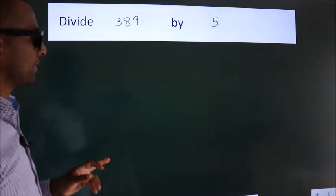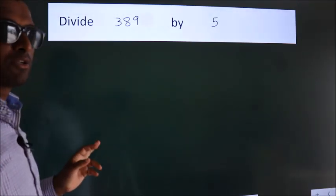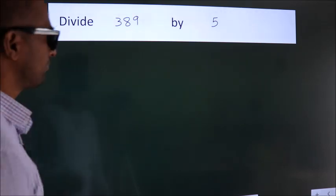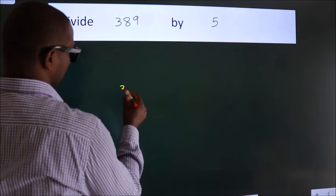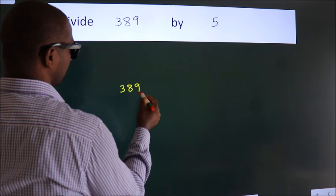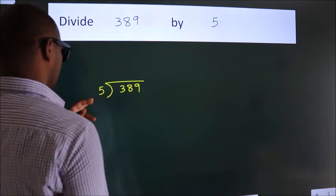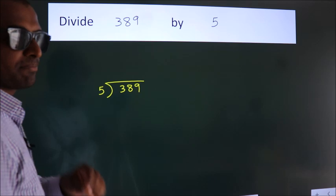Divide 389 by 5. To do this division, we should frame it in this way: 389 here, 5 here. This is your step 1.